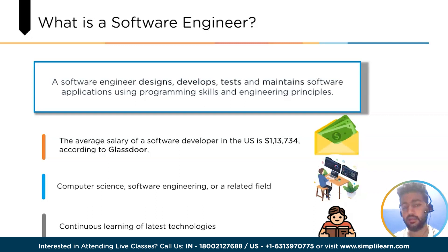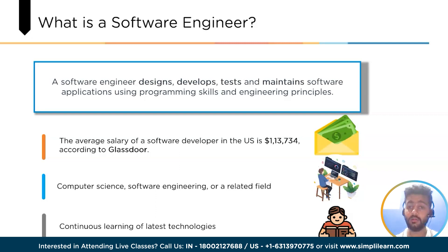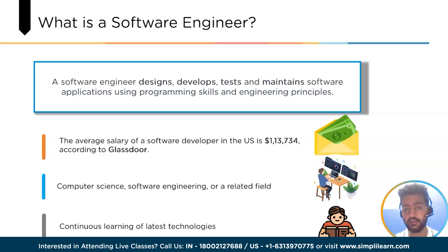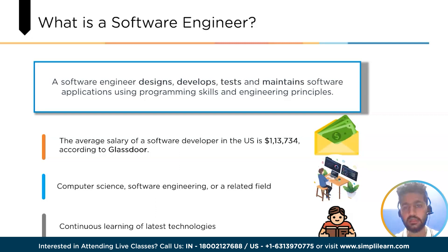The average salary of a software developer in the United States is $113,000 according to Glassdoor. To become a software engineer, one typically needs a degree in computer science, software engineering, or a related field, as well as strong programming skills, knowledge of software development methodologies, and experience with various programming languages and development tools. Continuous learning and keeping up with the latest trends and technologies are also essential for software engineer success.